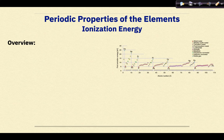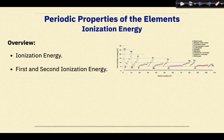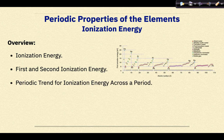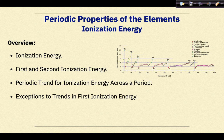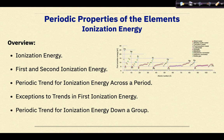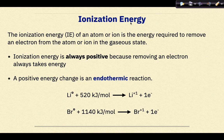Periodic properties of the elements: ionization energy. In this tutorial we will be looking at ionization energy — first and second ionization energy, periodic trends for ionization energy across a period, exceptions to trends in first ionization energy, and periodic trends for ionization energy down a group.